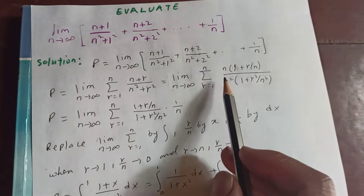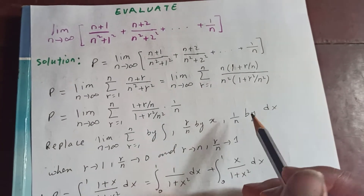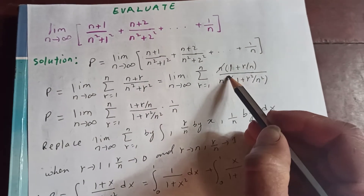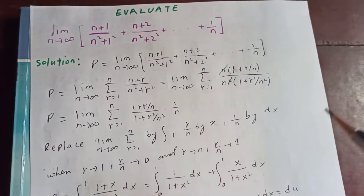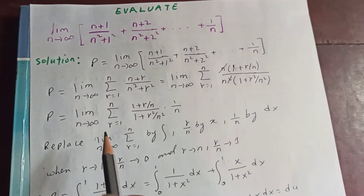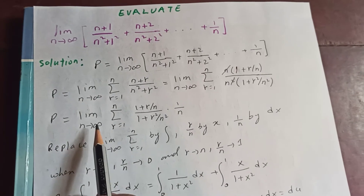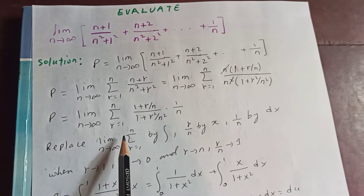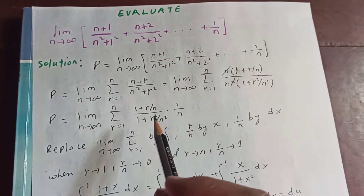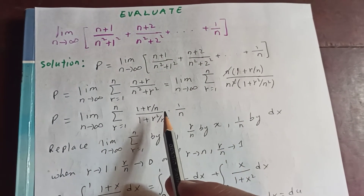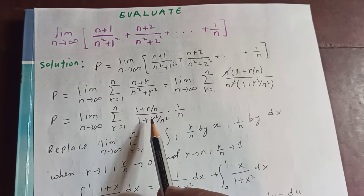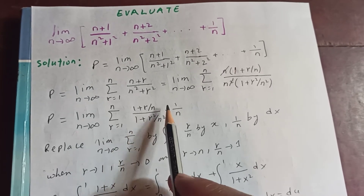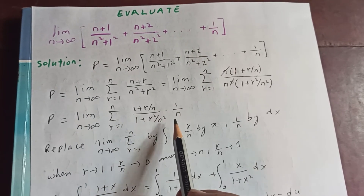The n and n squared partially cancel, so P equals limit as n tends to infinity, sum from r equal to 1 to n of 1 plus r by n, divided by 1 plus r squared by n squared, into 1 by n.